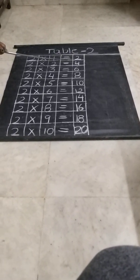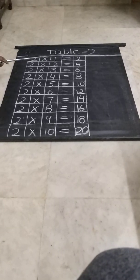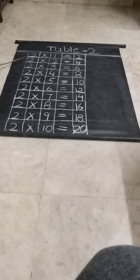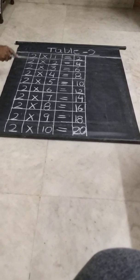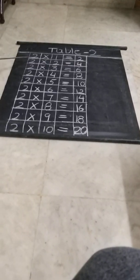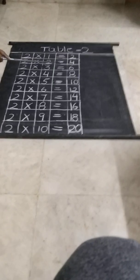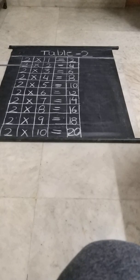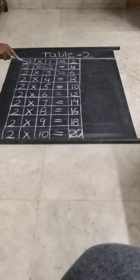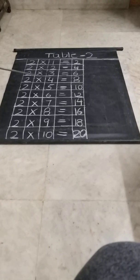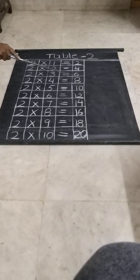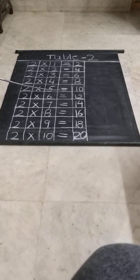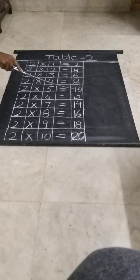So first, I will read out for you. Listen carefully. You all listen carefully. I am going to read the table 2. 2 into 1 is equal to 2. 2 into 2 is equal to 4. 2 into 3 is equal to 6. 2 into 4 is equal to 8. 2 into 5 is equal to 10, 1-0, 10.